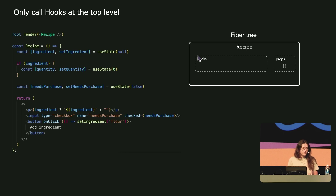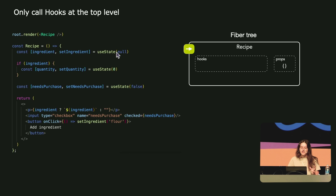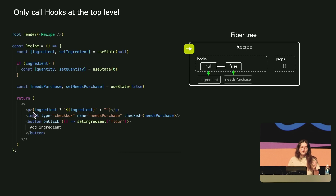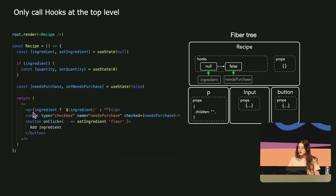So we're going to start there and render a recipe. Rendering a component simply means executing it. First we have this useState, which is going to write its default value into the fiber. Then ingredient is null, so we don't pass this condition. So we move on to this second useState, which also writes its value into the fiber. Hooks write their value in the fiber in a linked list where every value points towards the next one. They write their value in the order in which they're called. Then we move on to this JSX — we create fibers for the paragraph, the input, and the button. And this is our tree.